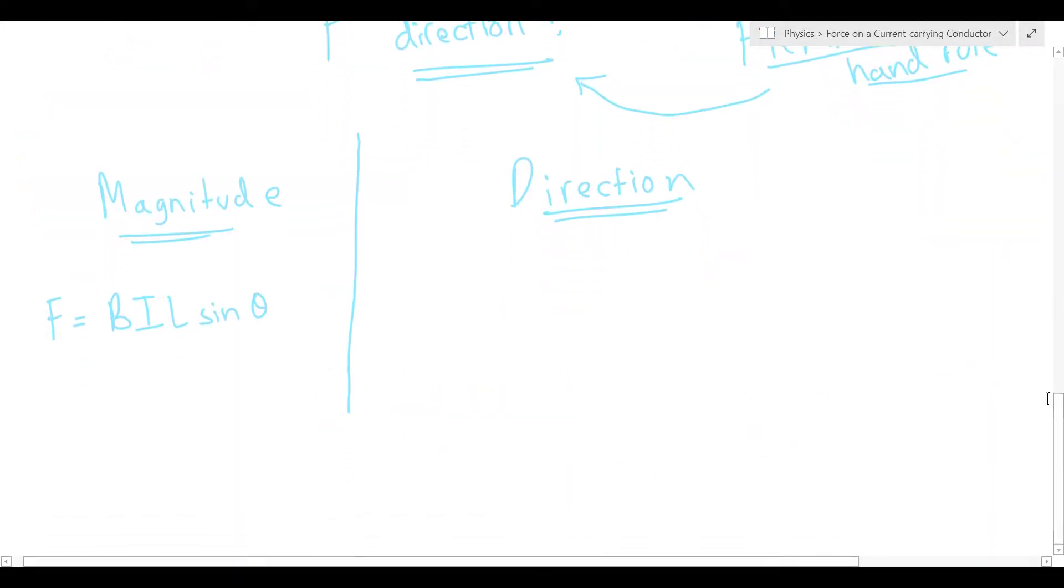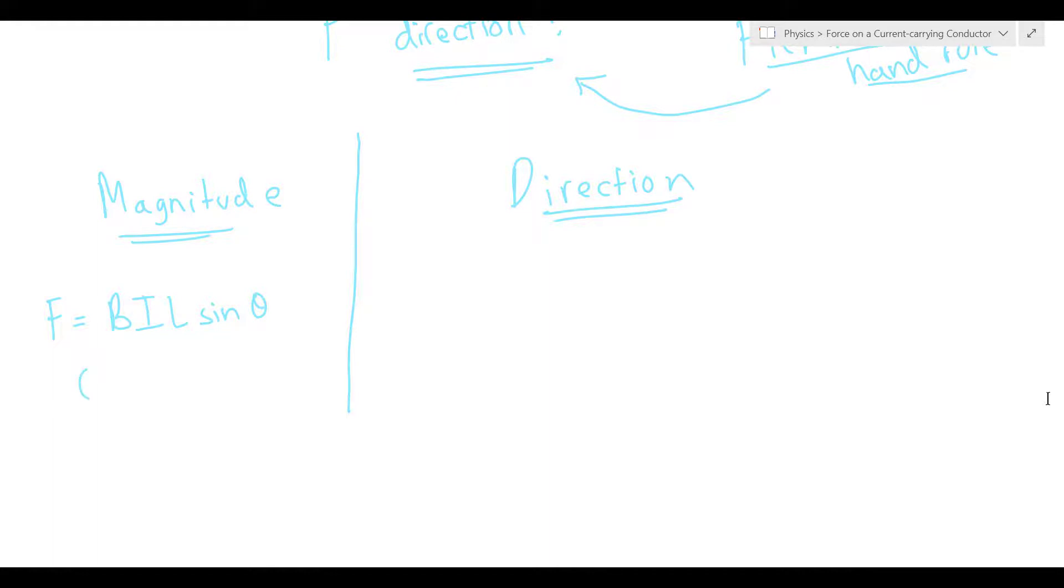So the derivation for how this formula arises and how it gives us the magnitude of the force, it's quite interesting, and it actually raises a lot of questions about the very nature of physics and how it's based on certain axioms or assumptions, and so I've made another video on that, which I'll link in the description, so do check that out if you're interested. But for now, we're going to talk about the direction, and I'll talk about how Fleming's left-hand rule comes about.